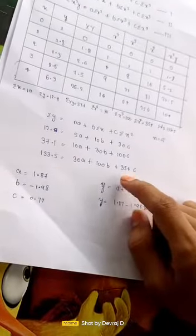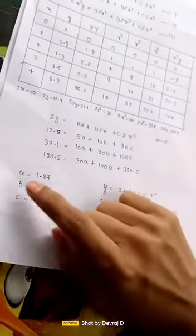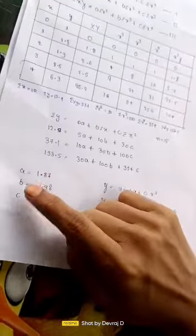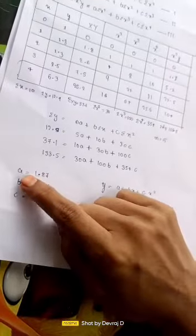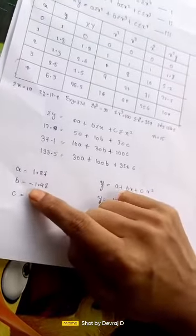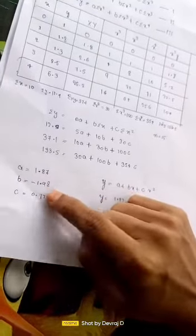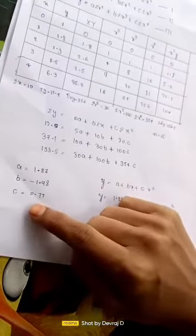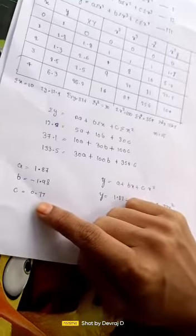By calculating all these equations we get the values of a, b and c. Then a equal to 1.87, b equal to minus 1.98, c equal to 0.77.